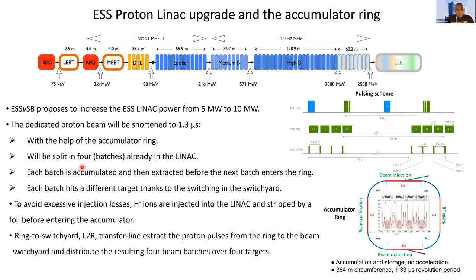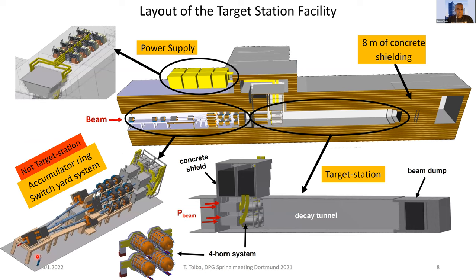The beam will be split into four batches, using four horns and four targets already at the linac system. Each batch will be accumulated and then extracted before the next batch enters the ring, and each batch will hit a different target using the switchyard. To avoid excessive injection losses, H-minus ions are injected into the ring and stripped by a foil before entering the accumulator. A ring-to-switchyard transfer line will extract the proton pulses and distribute them to the different targets.